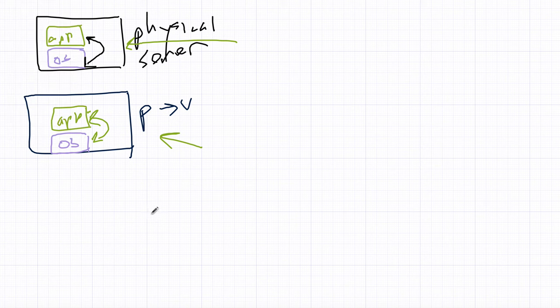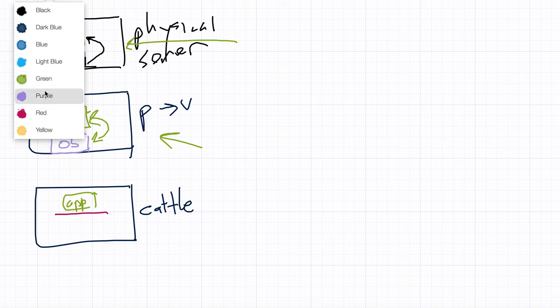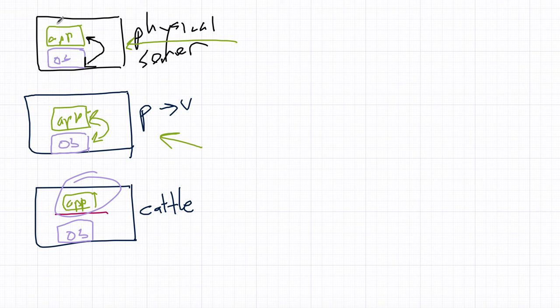As we moved on and we moved to the cattle notion, we have a much better delineation between the application and the operating system and the server it runs on. Because we're starting to deal more with the application itself. And then finally, sort of the next step in this is containers.